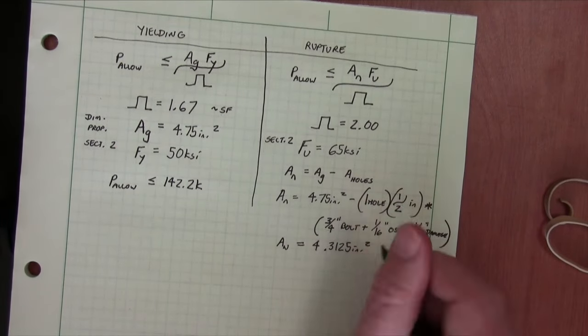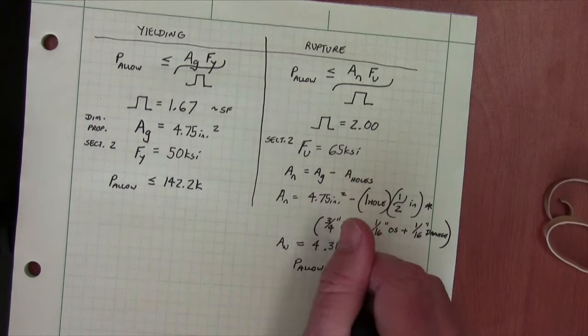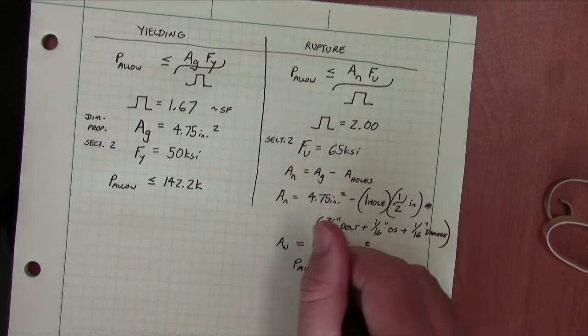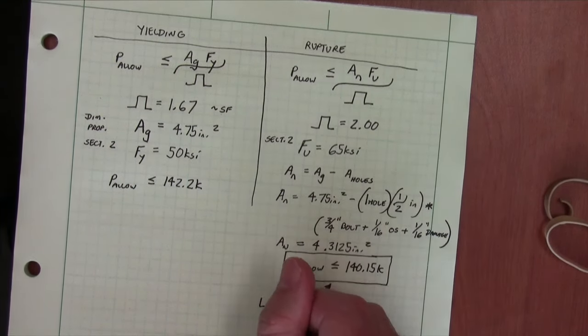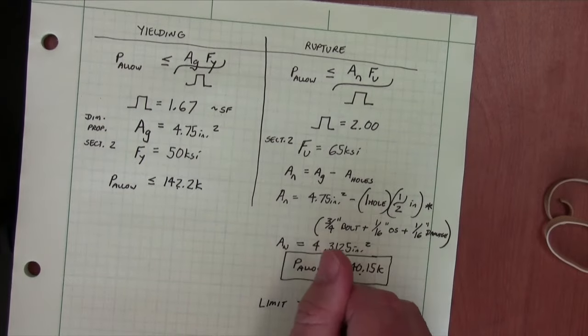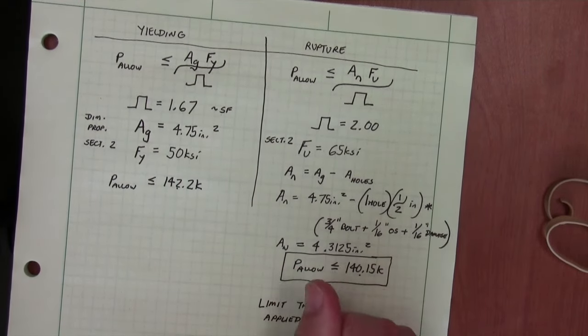Once we solve for the net area, we find 4.3125 and the allowable load of 140 kips, which is the governing factor of these two failure modes. And we essentially pick the lower one.